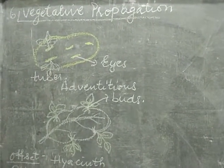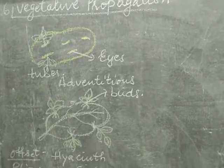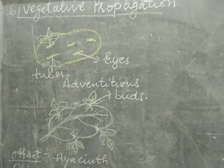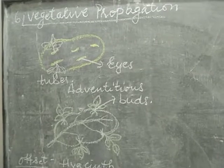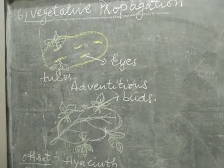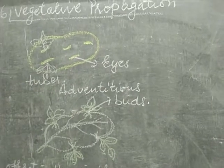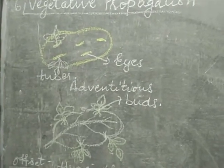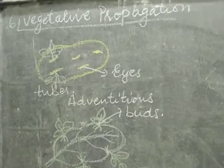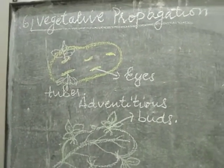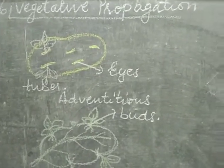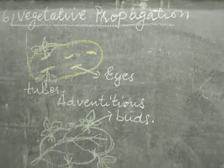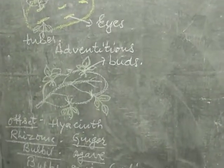Vegetative propagation is a mode of reproduction in which new plants are formed from vegetative parts of the plant, like root, stem, etc. This process is also very common in angiosperms — that means higher plants. Many higher plants use asexual mode of reproduction. Examples include bulbs like onion and garlic, potatoes with eyes on tubers, Bryophyllum leaf buds, water hyacinth, and Pistia. There is no reproductive part involved.